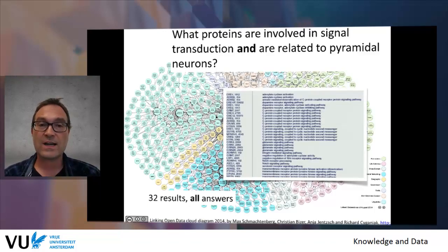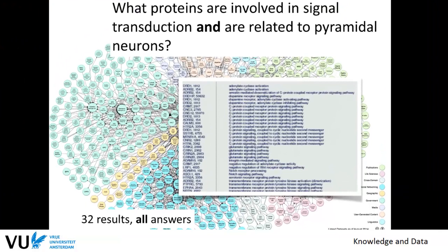If you try to do the same with a question about transduction and pyramidal neurons, you will see that there are many datasets around that provide structured information for this query. If you combine this in the right way and ask the right query, you get 32 results and all are correct answers. The information is there, but it's extremely difficult to find unless we really formalize the knowledge.